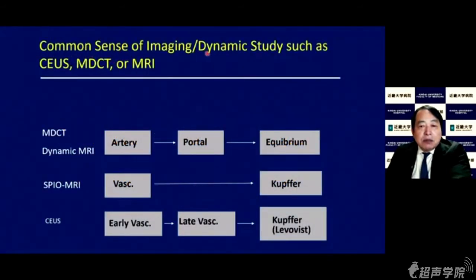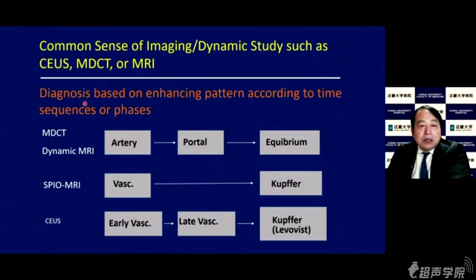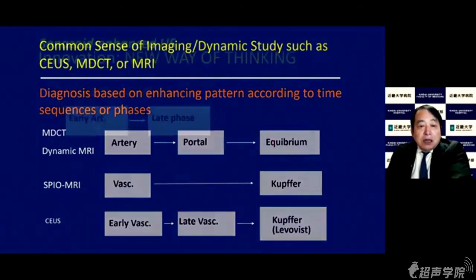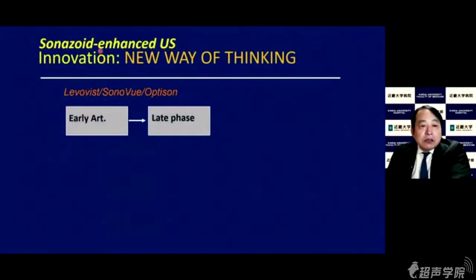Common imaging dynamic studies such as contrast-enhanced US, MDCT, and MRI diagnose based on enhancing patterns according to time sequences and phases like arterial phase and equilibrium phase. However, Sonazoid-enhanced ultrasound provides additional innovations. Sonazoid has stable and long-lasting Kupffer phase, so we can choose a new way of thinking.